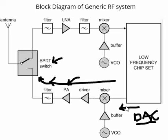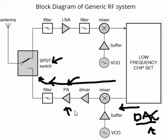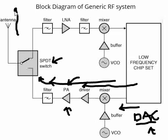The transmit section comprises a digital section where actual data is generated, and then the digital data is converted into analog using the DAC. It is then mixed with a high-frequency carrier using a mixer, and that high frequency is generated by something called a VCO — voltage controlled oscillator. This is amplified using a power amplifier, because we need to transmit the data at high power. Whatever processing happens before is very low power, so we generate high power data and transmit it through the antenna.